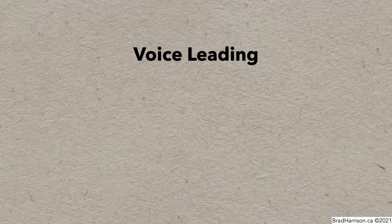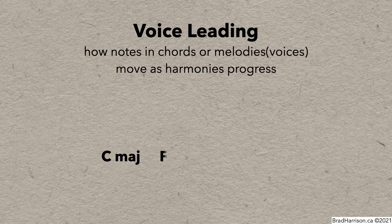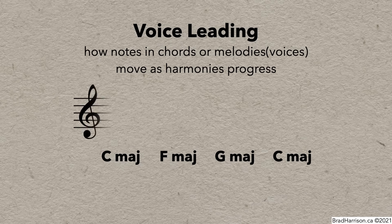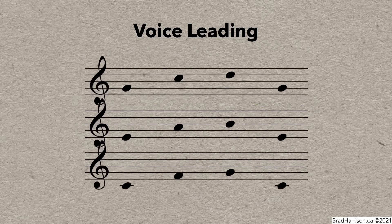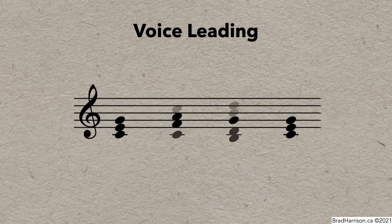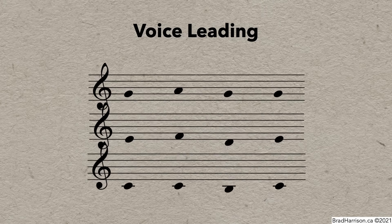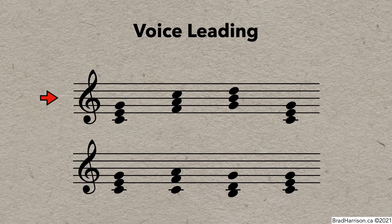One of the most common uses of inversions is to improve voice leading, which is related to how notes in chords or melodies move as harmonies progress. Let's say a piece of music moves from C major to F major to G major and then back to C major. In root position, these chords have a lot of parallel motion, which means all the notes are moving in the same direction at the same time — considered undesirable in some genres. However, if we instead use inversions for the F and G triads, it has all the same notes but there's way less motion between the voices, which is generally easier to perform and sounds smoother. Neither is inherently better or worse, but one version might be more useful depending on context, style, and personal preference.